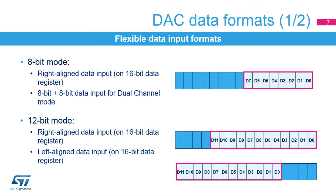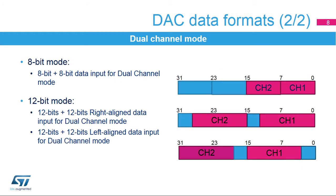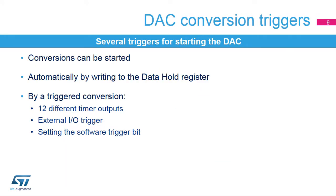In 8-bit mode, it's a right-aligned 8-bit data format. In dual-channel mode, it's an 8-bit plus 8-bit data format in order to provide input data for two DACs simultaneously. In 12-bit mode, either a right- or left-aligned mode can be used for input data. DAC output conversion is started by writing to the data hold register using software. 12 different timer outputs, an external I/O, or software can trigger a DAC conversion.